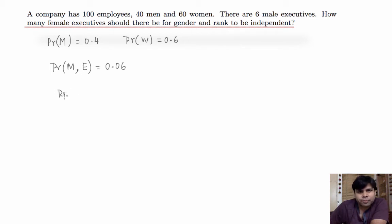Gender and rank are independent means probability of M comma E must be equal to probability of M times probability of E. We already know that probability of male executive is 0.06 and probability of male is 0.4.